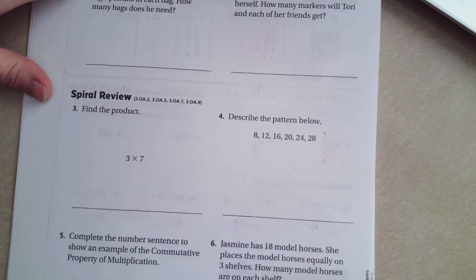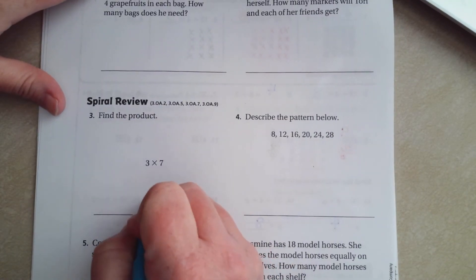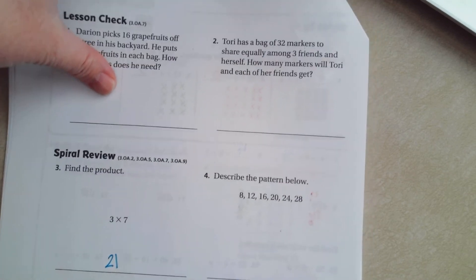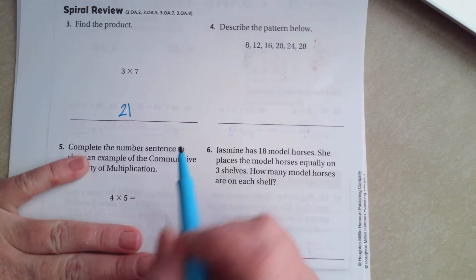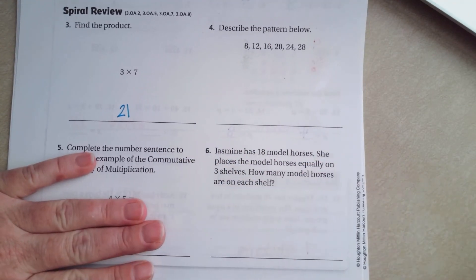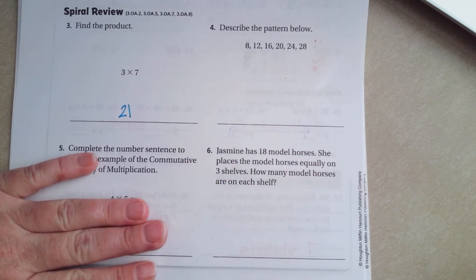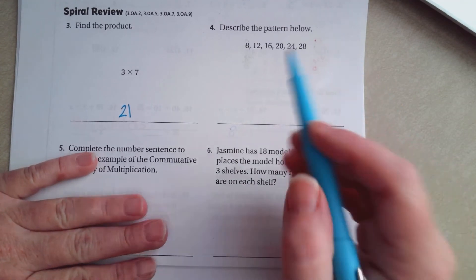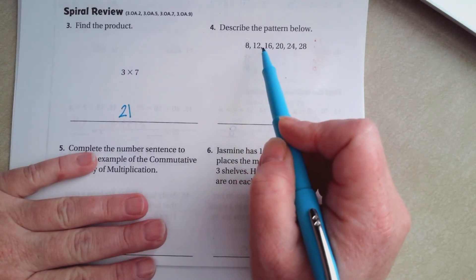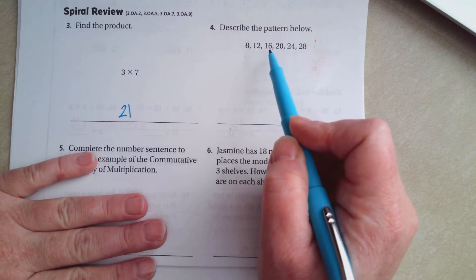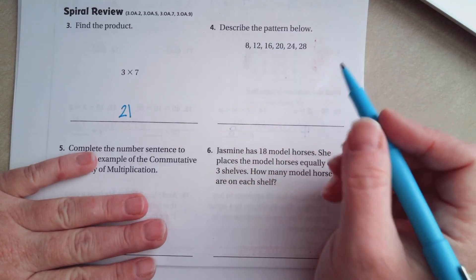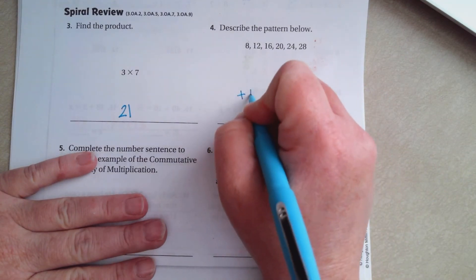We're going to find the product. Well, 3 times 7 is 21. Describe the pattern below. So I can't multiply evenly and get from 8 to 12, but I can add. And since it's increasing, it's going up, it's either going to be adding or multiplication. So what do I have to add to 8 to get to 12? Well, I have to add 4. So if I add 4 to 12, do I get 16? Yes I do. Add 4 again, 20. Exactly. So it's going to be add 4.